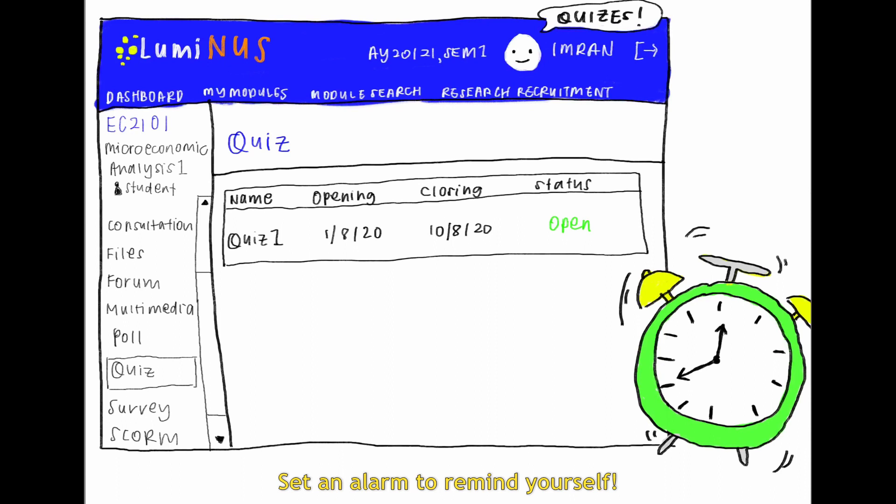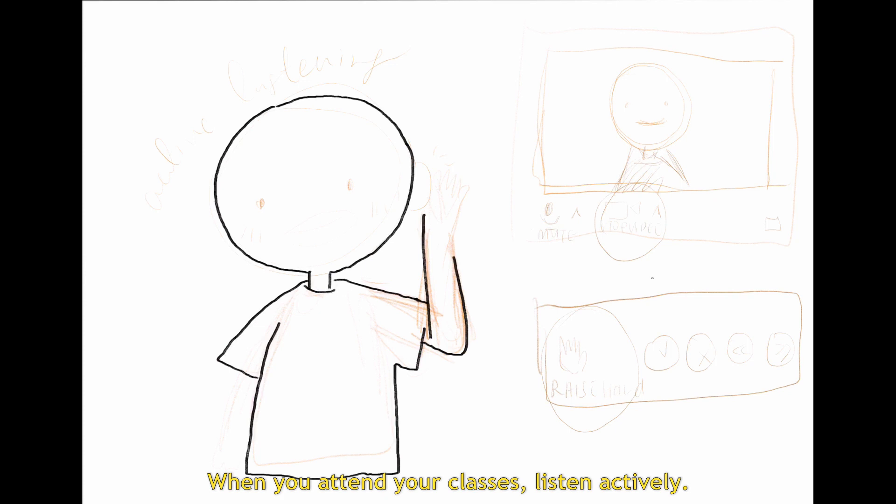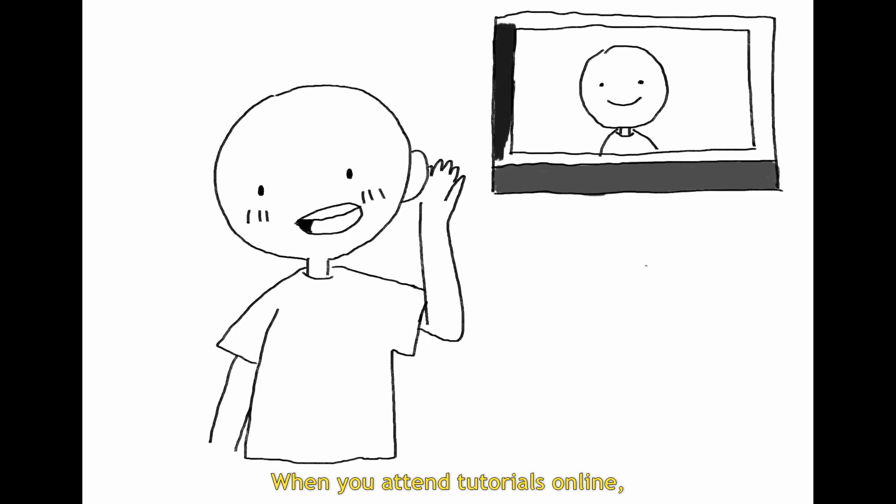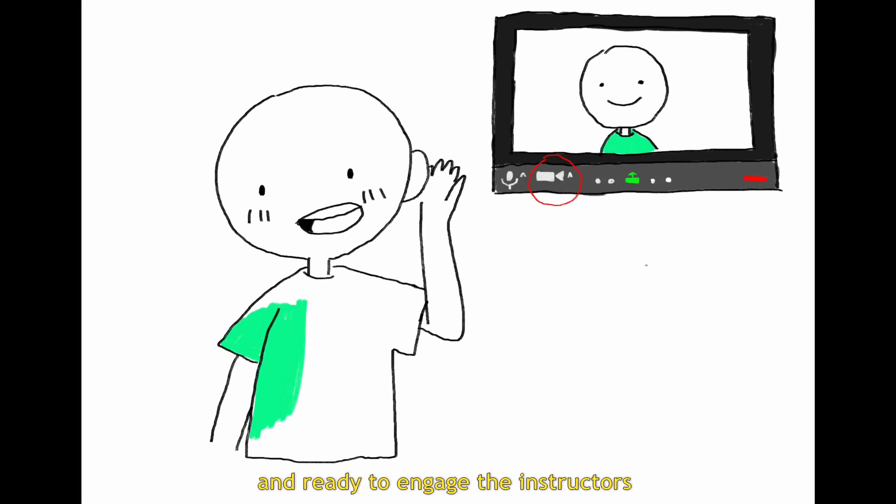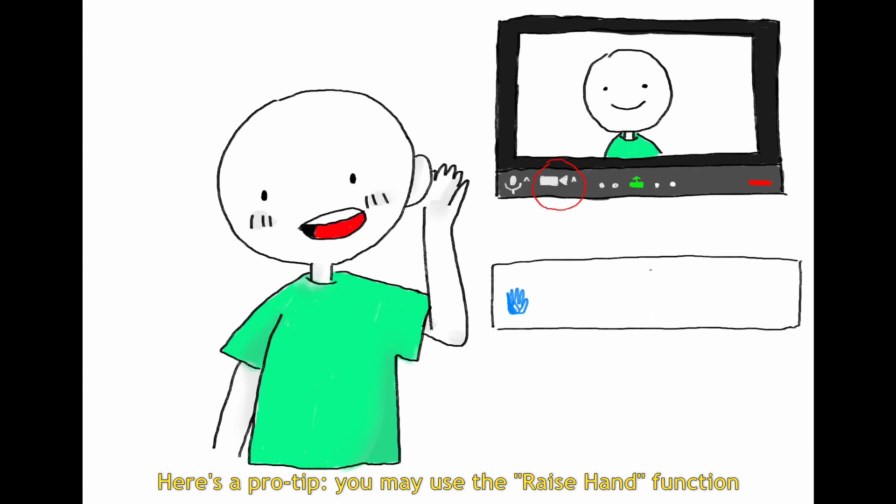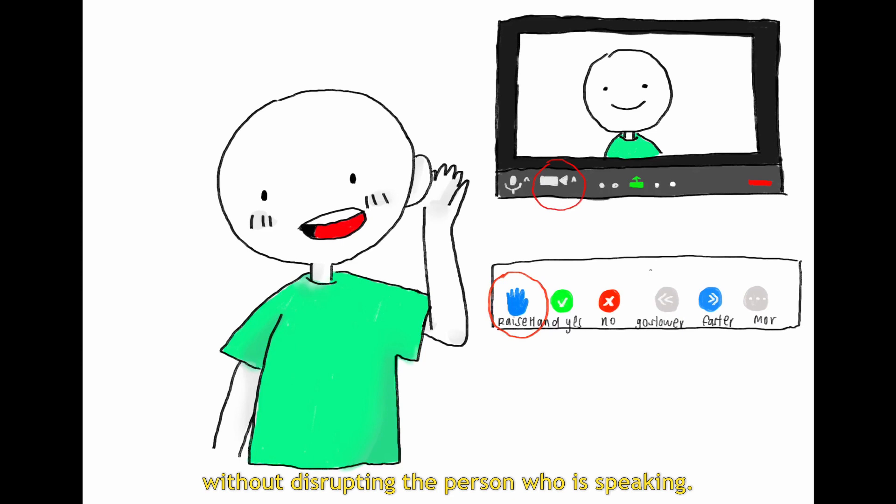Number two, listen actively. When you attend your classes, listen actively. Take notes if you must and don't be shy to ask questions. When you attend tutorials online, turn on your video to show that you are present and ready to engage the instructors and your peers with your full attention. Here's a pro tip. You may use the raise hand function to signal that you have a question or a point to add without disrupting the person who is speaking.